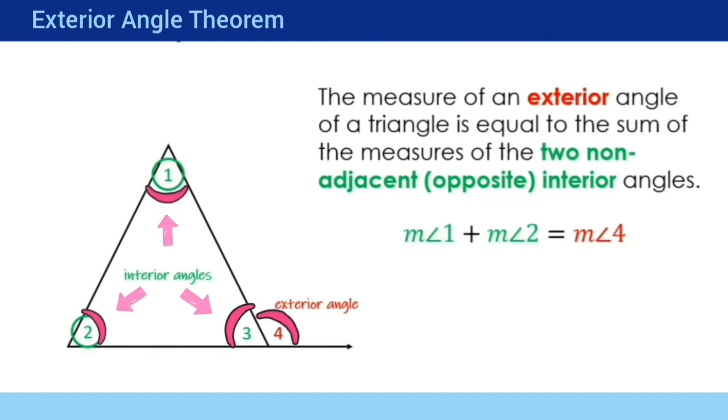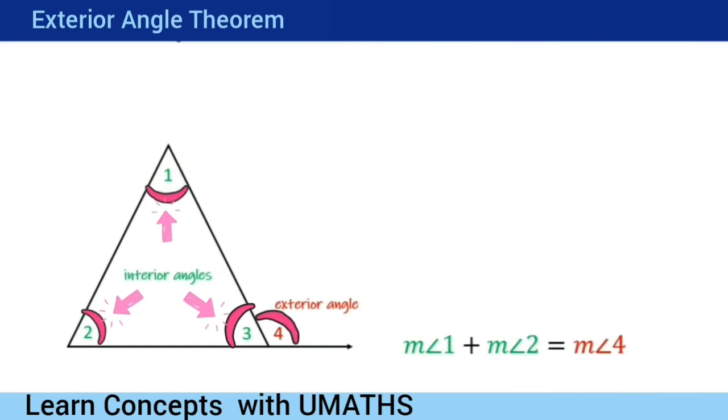In previous videos we have learned that the sum of the measures of interior angles of a triangle is 180 degrees. Hence we can say measure angle 1 plus measure angle 2 plus measure angle 3 equals 180 degrees. If you want to see the proof of this, click on the link displayed in the top right corner of this video.